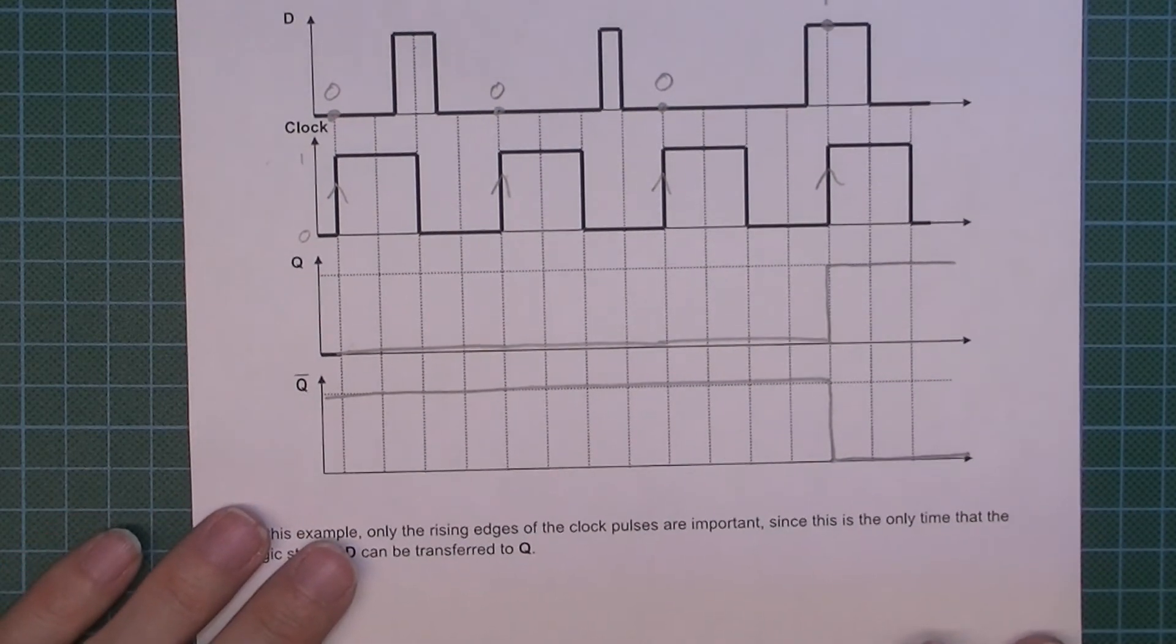And then vice versa. So the not Q is actually really easy. Hopefully you understand it has been really easy to do because it's just the inverse of Q.